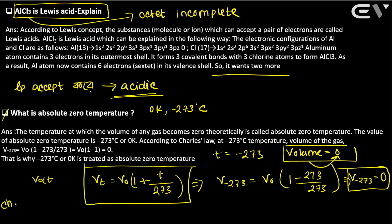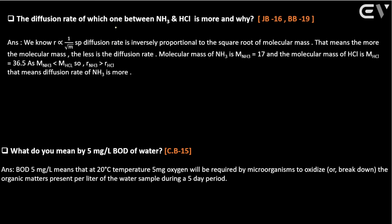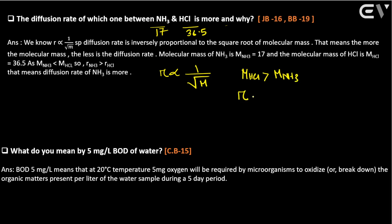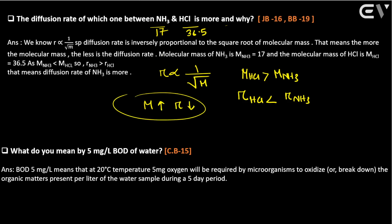Which has a greater diffusion rate between NH3 and HCl, and why? By Graham's Law, diffusion rate is inversely proportional to the square root of molecular mass. Molecular mass of NH3 = 17, molecular mass of HCl = 36.5. Since HCl has greater molecular mass, its diffusion rate is less. Therefore, diffusion rate of NH3 is greater than that of HCl.